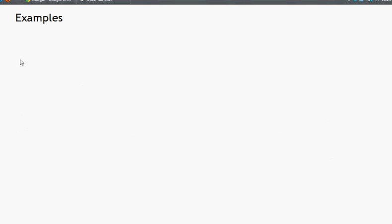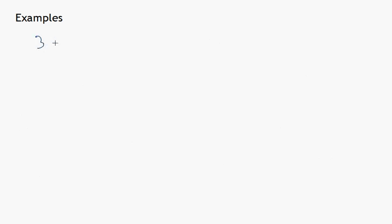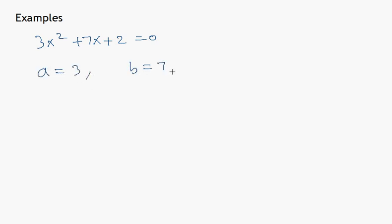Let us consider an example and find the nature of the roots of this equation. Suppose we have 3x squared plus 7x plus 2 equals zero. We will find the discriminant and determine the nature of the roots. In this equation, a equals 3, b equals 7, and c equals 2.